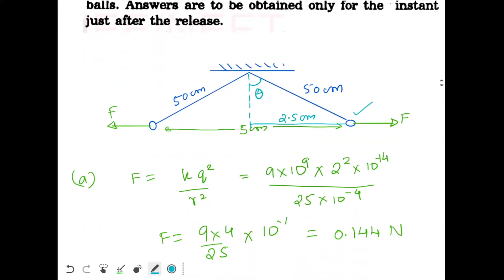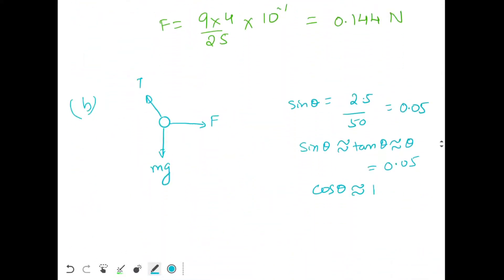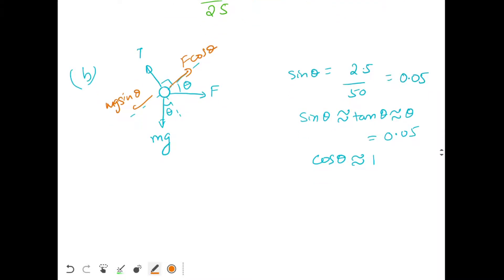So now coming back to this diagram, we have taken theta with the vertical. This is your direction perpendicular to string. So net force in this direction will be mg sin theta and here we have F cos theta. Along this string force is zero but perpendicular to string we have net force mg sin theta minus F cos theta.